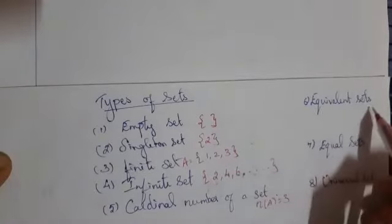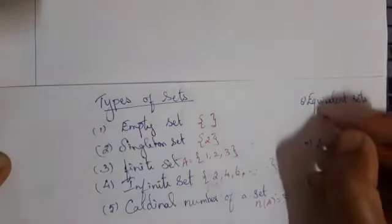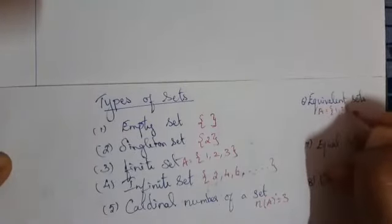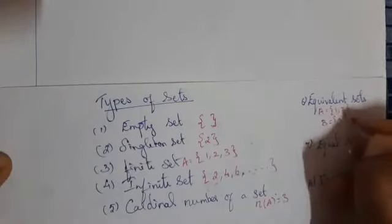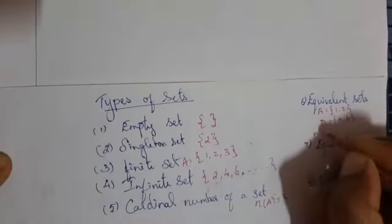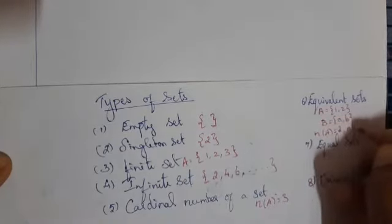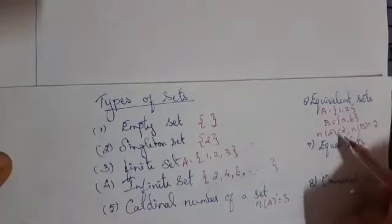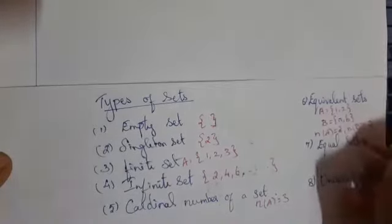Next, equivalent set. What is the meaning for equivalent sets? You have to take two sets — that is {1, 2} and next set {a, b}. Check: the number of elements in A is equal to two, and the number of elements in B is also two. Therefore, A and B are equivalent.